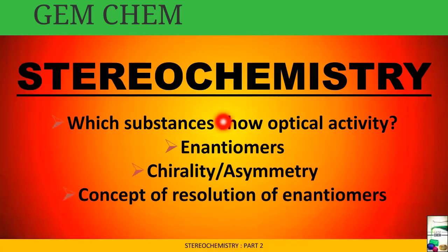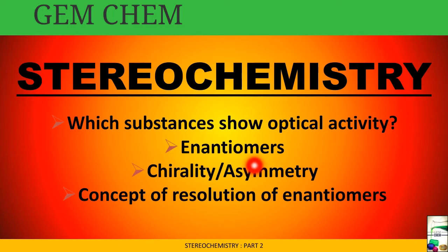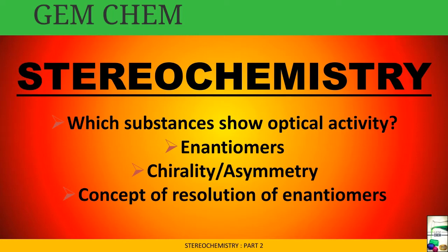Hi everyone, welcome to Jemkim. Today's video is on stereochemistry part two, where we will deal with which substances show optical activity, enantiomers, chirality or asymmetry, and the concept of resolution of enantiomers. This concept of resolution will be just introduced in this video and dealt with further in the next videos. If you have not watched the previous videos on stereochemistry, the link is in the description box. If you are new to Jemkim, do not forget to subscribe and hit the bell icon for regular updates.